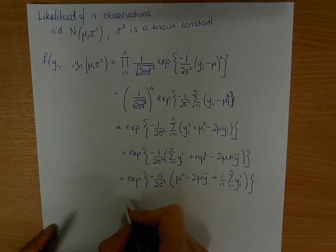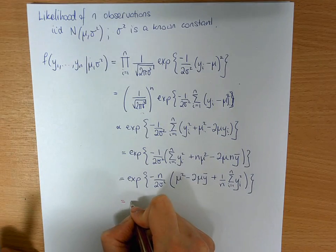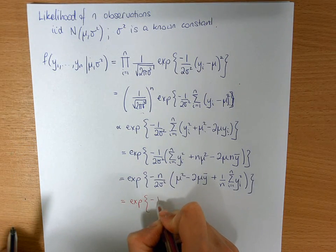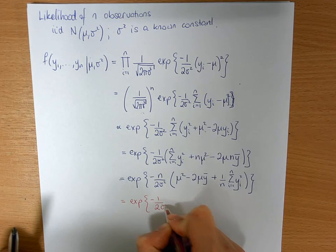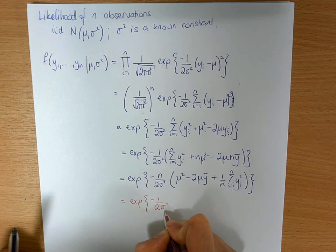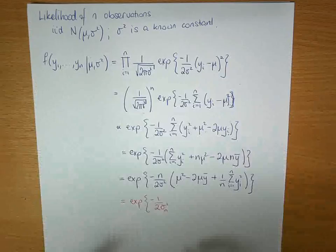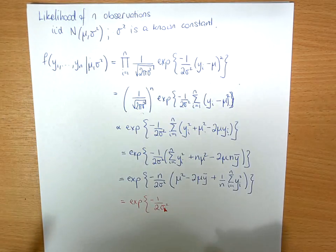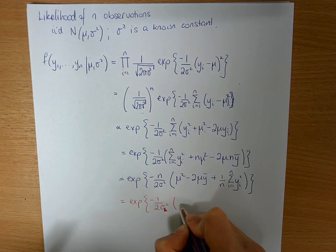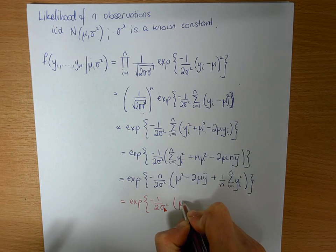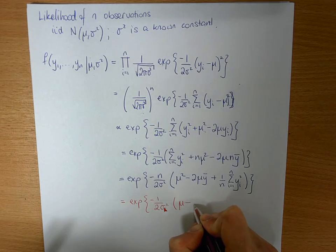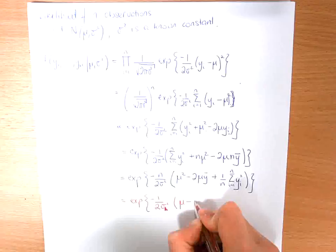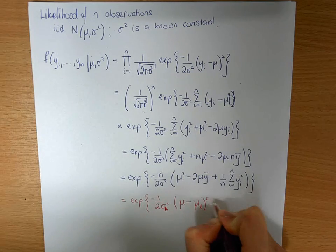So this should be of the form, is going to be of the form of minus 1 over some constant, and I'll subscript that l for likelihood, and you'll have mu minus some mean which is dependent on the data, called mu l, squared.